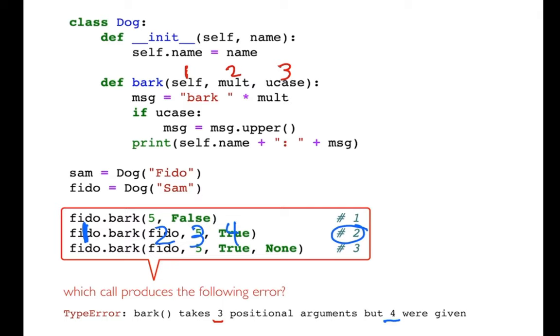So just be careful when you're getting these error messages. It says there are four given. Don't keep staring at it and saying 'oh I passed three.' Make sure you count that one at the beginning as well.